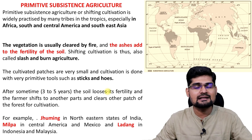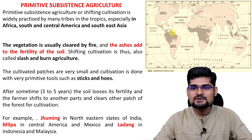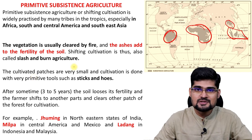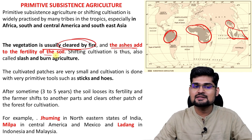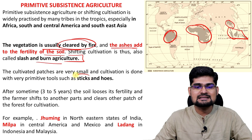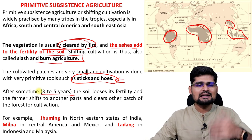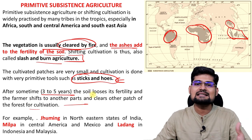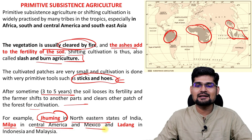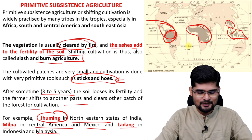Now comes primitive subsistence agriculture. In primitive times, subsistence agriculture was practiced just for need-based food. Major portions of Africa, South America, India and Southeast Asia, and the Indo-Pacific region practice this. The slash and burn technique involves clearing forests by fire and cultivating the soil; when fertility is lost, people move to another location. This is called slash and burn, where sticks and hoes are used for cultivation. Generally three to five years is the time before shifting. It is called jhoom or jhoom cultivation in Northeast India, Milpa in Central America and Mexico, and Ladang in Indonesia and Malaysia.